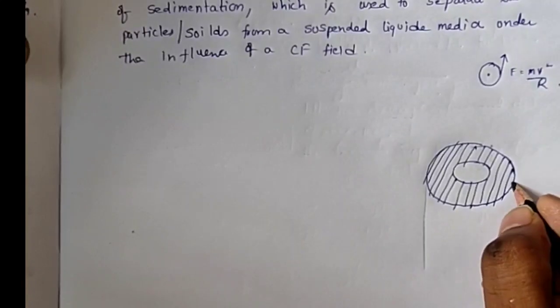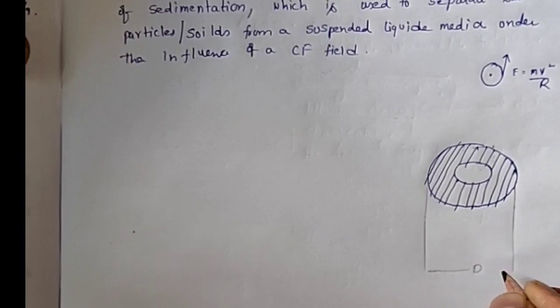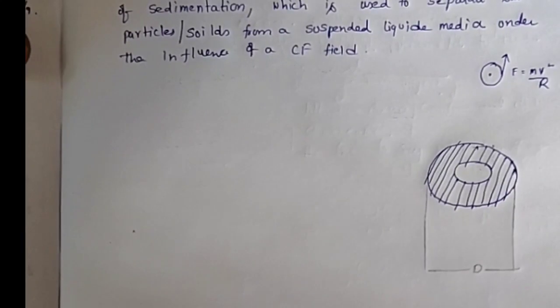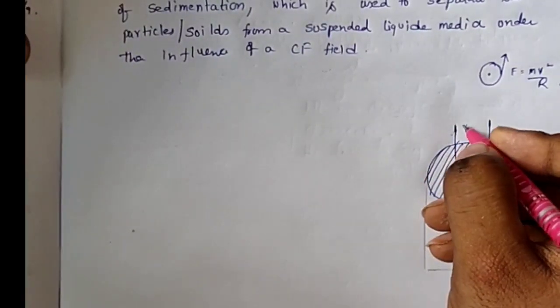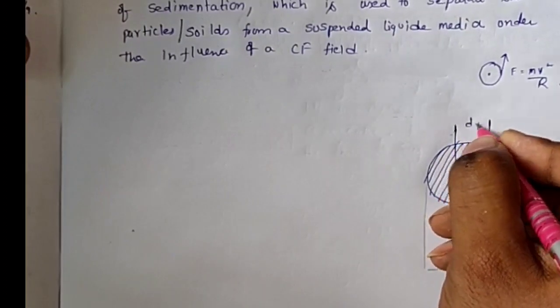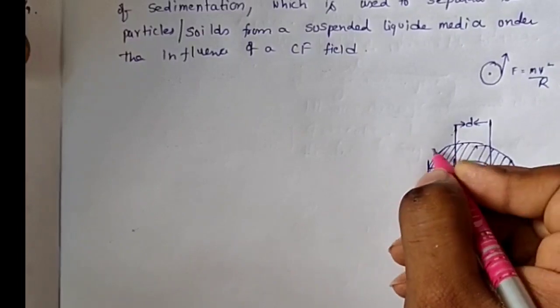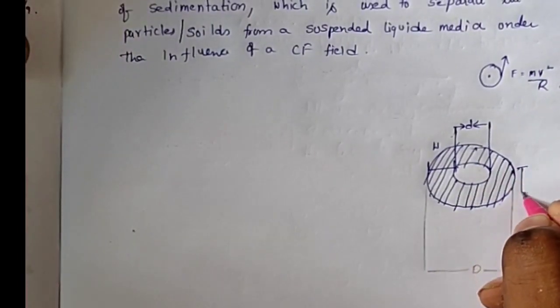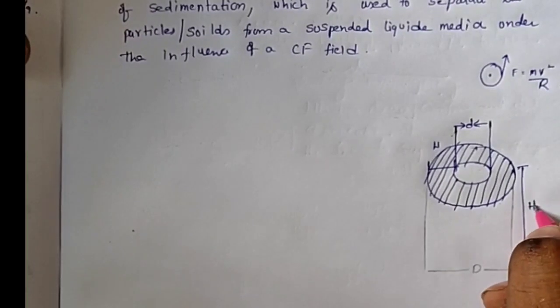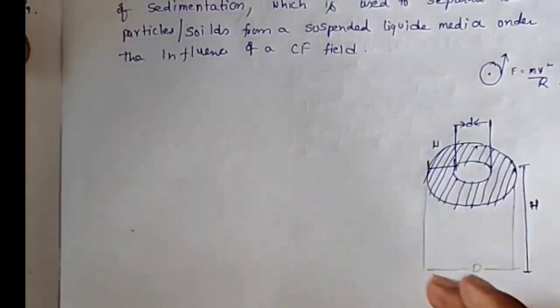This is the internal diameter D. This is the internal diameter of the basket. This is called the width, and this is going to be the height of the centrifuge. We need to take only the filtration area of the basket.